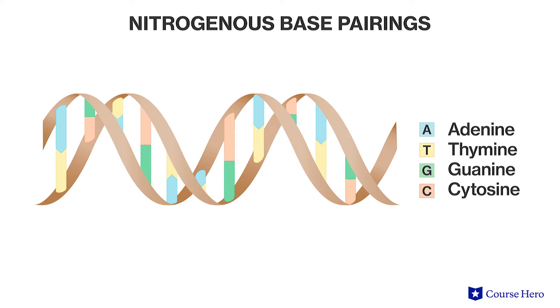According to the base pairing rule, whenever one strand of DNA has an A, the partner or complementary strand has a T, and if there is a G in one strand, it'll be paired up with a C in the complementary strand. In 1953, when Watson and Crick reported the structure of DNA in the famous journal Nature, they ended the paper by suggesting a basic mechanism for its replication, prompted by the base pairing rule, which turned out to be correct.